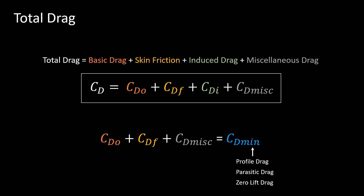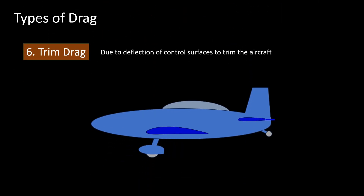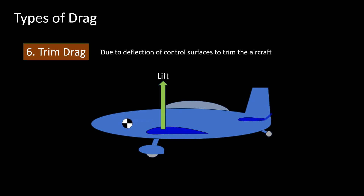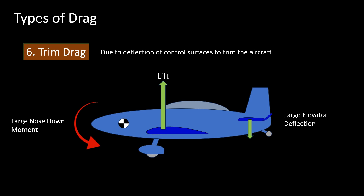Another type of drag, called trim drag, arises due to the process of trimming the aircraft. Deflecting control surfaces usually increases drag. For example, if a conventional airplane is loaded with its CG far forward, a higher deflection of the elevator will be required to trim it. This not only results in additional profile drag, but also results in extra lift the wing must generate, which increases the lift-induced drag. Therefore, it is important to size the tail so that the elevator is close to neutral position while cruising.